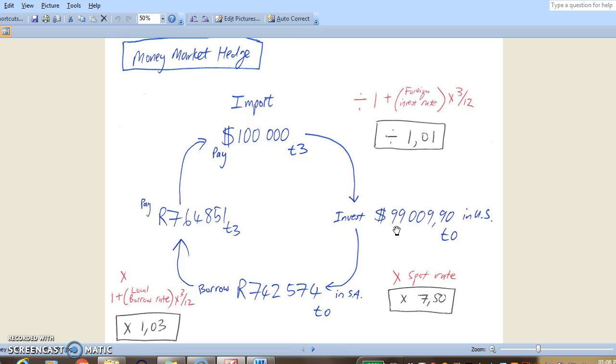Now in order to invest $99,000 today, we need to borrow money in South Africa. Remember we are based in South Africa. So at the spot rate of today, 7.50, that equates to R742,574 that we have to borrow in South Africa today.